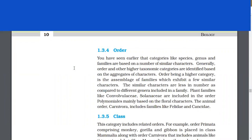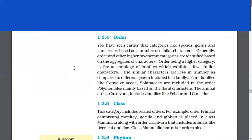Order. You have seen earlier that categories like species, genus, and families are based on a number of similar characters. Generally, order and other higher taxonomic categories are identified based on the aggregates of characters. Order being a higher category is the assemblage of families which exhibit a few similar characters. The similar characters are less in number as compared to different genera included in a family. Plant families like Convolvulaceae and Solanaceae are included in the order Polymoniales mainly based on the floral characters. The animal order Carnivora includes families like Felidae and Canidae.